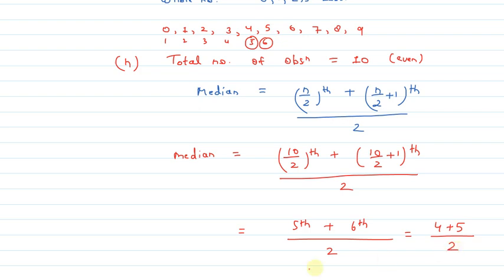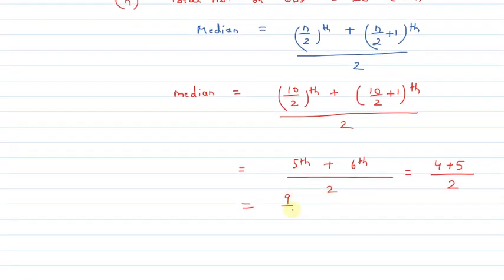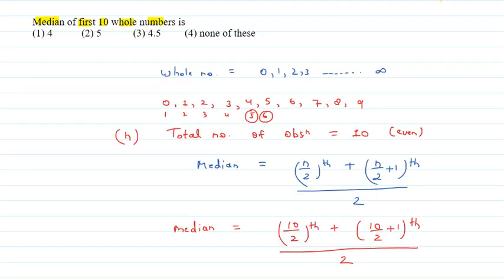So, this will be 4 plus 5 divided by 2. 4 plus 5 is 9 divided by 2, which equals 4.5. Therefore, median is 4.5. According to the options, it will be option 3, 4.5. I hope you understood the explanation. Thank you.